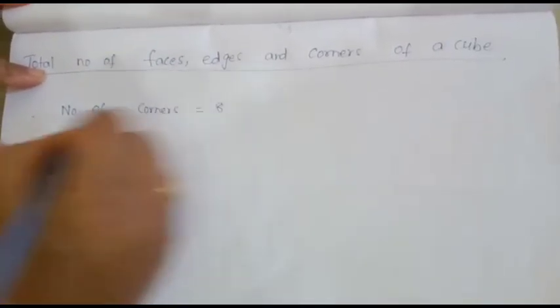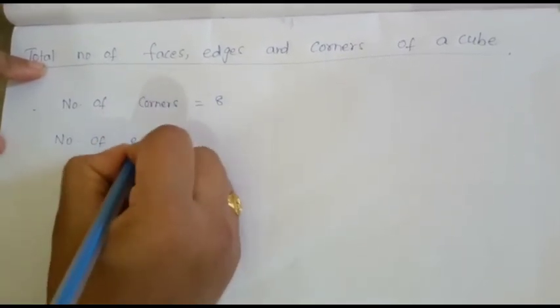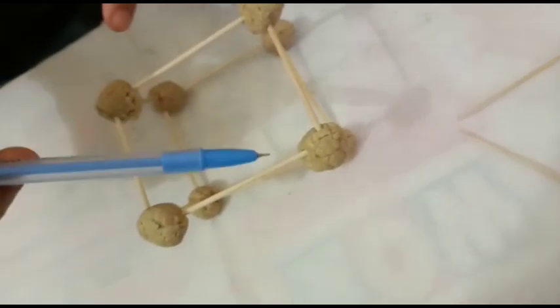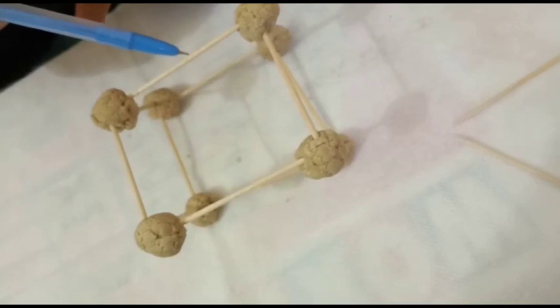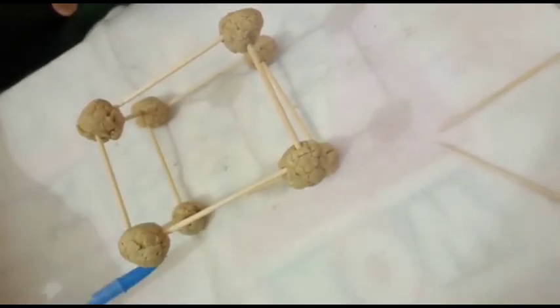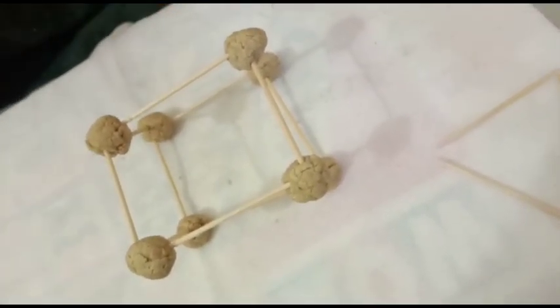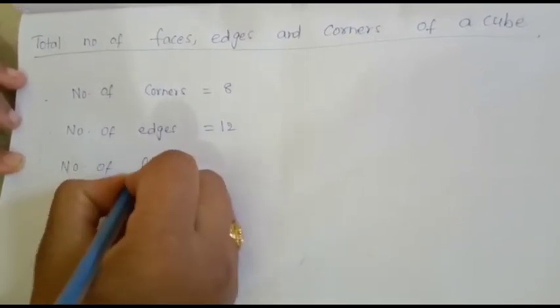Next, coming to the total number of edges. These toothpicks are the edges. Let's count the edges: one, two, three, four, five, six, seven, eight, nine, ten, eleven, twelve. Therefore the number of edges is equal to twelve.